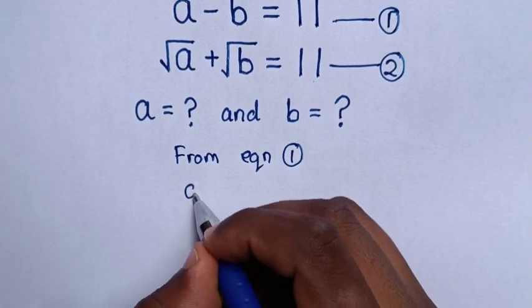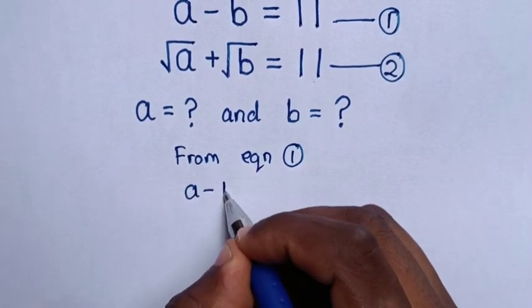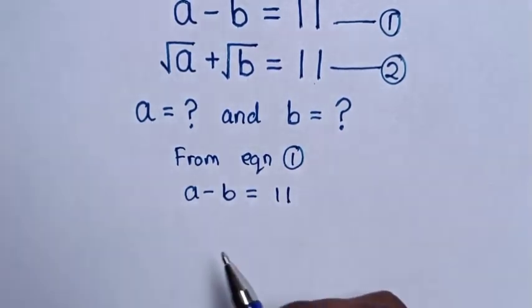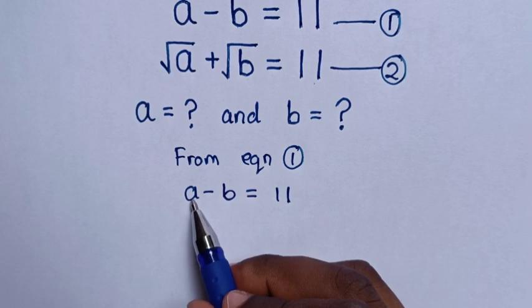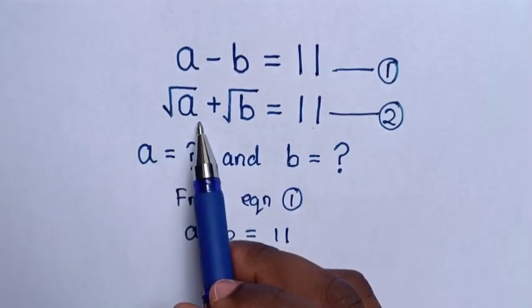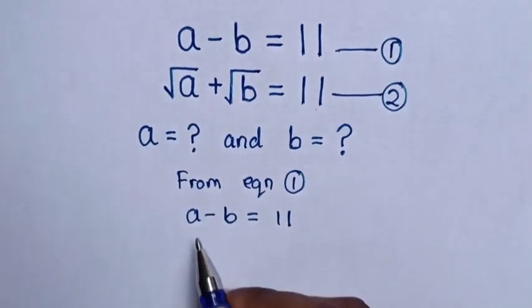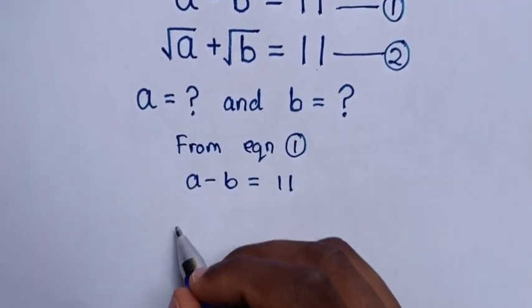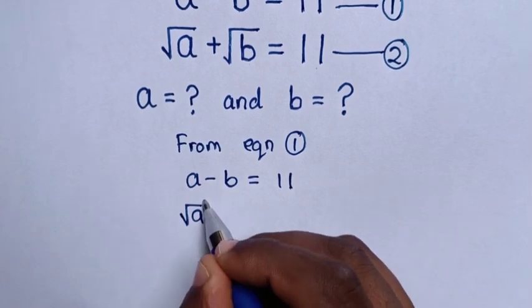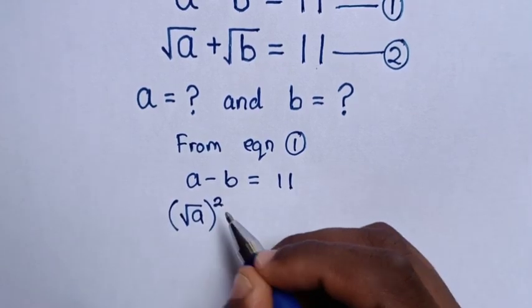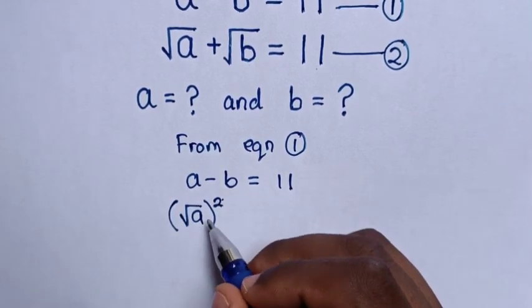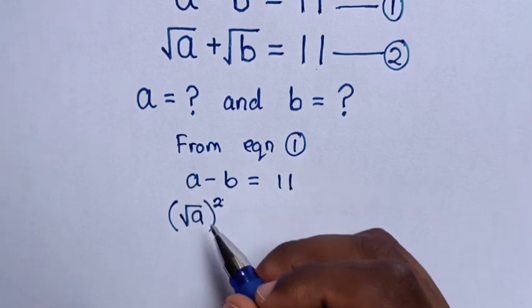From equation 1, a minus b equals 11. We rewrite a as square root of a, squared, because the square root cancels with the square to give a.